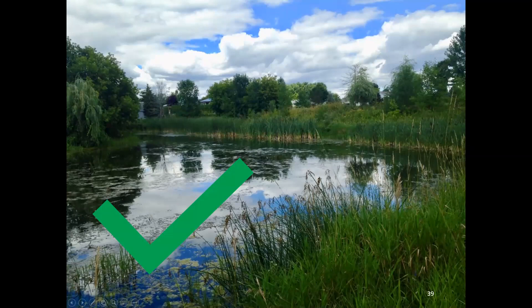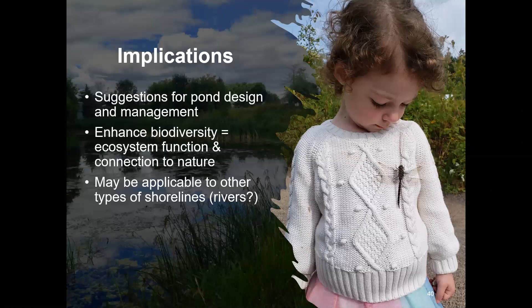The implications of this research include suggestions for pond design and management. If a biologist works with engineering firms, they could do a better job designing these systems for biodiversity. Enhancing biodiversity enhances ecosystem function and also enhances the opportunity for people to connect with nature — a connection that improves human well-being and makes people care about and want to conserve nature. This research may also be applicable to other types of shorelines, and there is research showing that macrophytes are important in stream ecosystems as well.